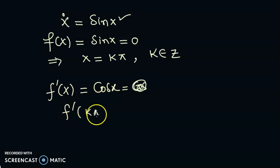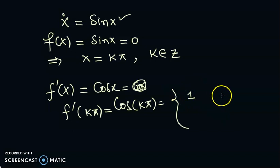This is cos of k pi, which is going to be 1 if k is even, and this is minus 1 if k is odd.